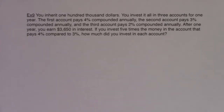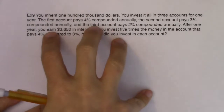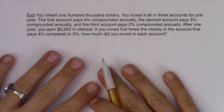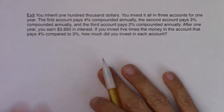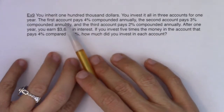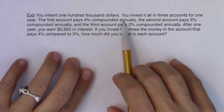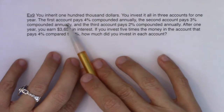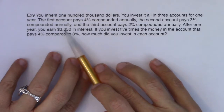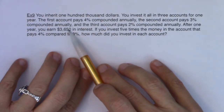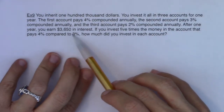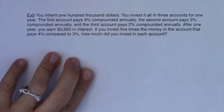All right, Math 31, here we are with Example 9. Listen for the variables in this problem. You inherit $100,000 — fantastic! You invest it all in three accounts for one year. The first account pays 4% compounded annually, the second pays 3% compounded annually, and the third pays 2% compounded annually. After one year you earn $3,650 in interest. If you invest five times the money in the account that pays 4% compared to 3%, how much did you invest in each account?